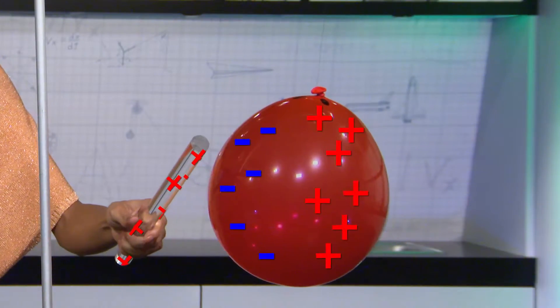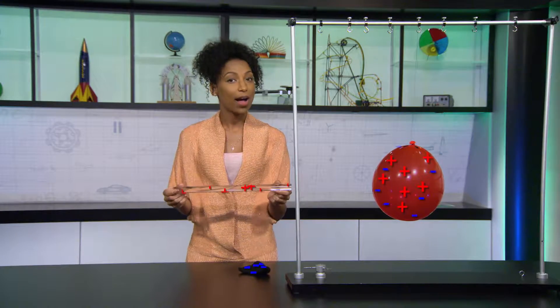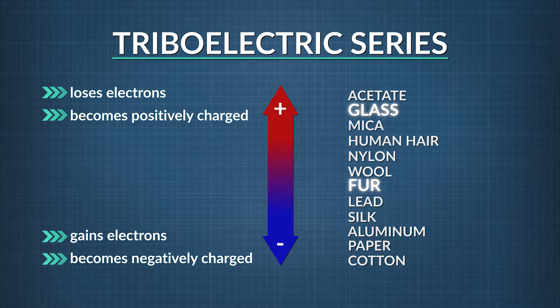When I hold the rod close to the balloon, the balloon is polarized and attracted to the rod — proof that we have given the rod a net charge just using friction. There is a list of materials called the triboelectric series that ranks materials on how easily they give up or receive electrons. Since glass is higher up on the list, when fur and glass are rubbed together, the glass becomes positively charged and the fur gains a net negative charge. So friction is one way that objects can accumulate an electrostatic charge.